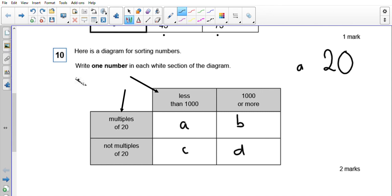If I look at b now, b is still in my multiples of 20, but now b needs to be 1000 or more. Now if you're up to date with your multiples of 20 or 2 times table, you're confidently placed value, you'll know that 1000 is a multiple of 20. Because it says 1000 or more, I can just pop my 1000 in there for b. Nice and straightforward, happy days.